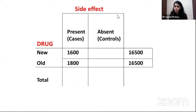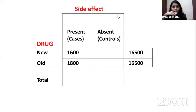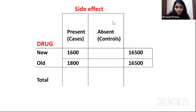Now let's move to RCT. In an RCT, you take a group of patients, divide them into two arms of almost equal size using random assignment: a treatment arm and a control arm. You give the new drug to the treatment arm and either a placebo or standard treatment to the control arm, then follow them to see cure rates.